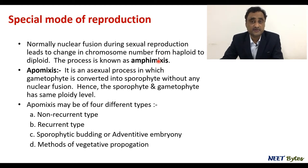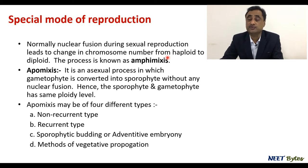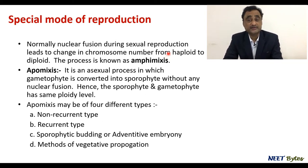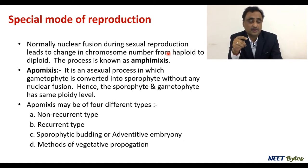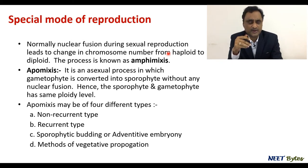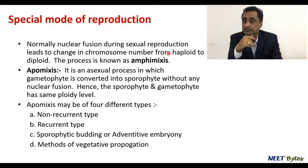But what is apomixis? Apomixis is an asexual process, but the difference is that here the sporophyte is getting converted into gametophyte and vice versa, but there is no sexual fusion. If there is no sexual fusion, naturally there will be no changes at the ploidy level. Two key things to keep in mind about apomixis: one, it happens without nuclear fusion; two, the gametophyte gets converted into sporophyte or sporophyte gets converted into gametophyte. There are four different types of apomixis recognized: non-recurrent type, recurrent type, sporophytic budding or adventive embryony, and special methods of vegetative propagation.